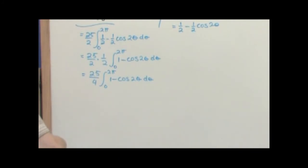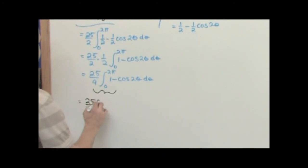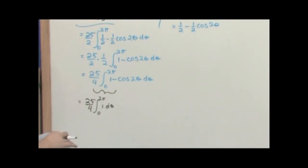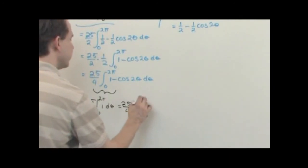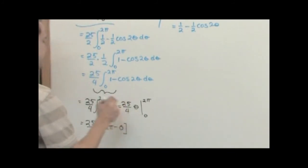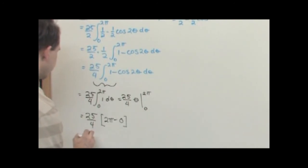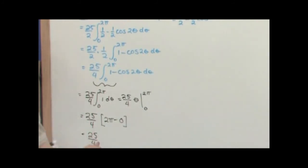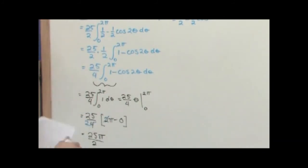I'm going to work with the first part: 25 over 4 times the integral from 0 to 2π of 1 d theta. I'm carrying the coefficient on the outside with me so I don't forget to multiply by it later. This equals 25 over 4 times theta evaluated from 0 to 2π, which is 25 over 4 times (2π − 0). The 4 and the 2 simplify, leaving 25π over 2. That is the solution to this first integral, including the coefficient.